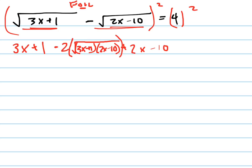So that's what you're going to get on the left side, and then on the right side of course you're going to get 16. Now what I want to do is, now I do have one radical, but I still have to isolate this on one side of the equation and then square both sides again.